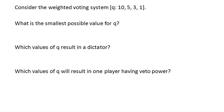Let's consider this weighted voting system. We have players with weights 10, 5, 3, and 1, which means we have a total of 15, 16, 17, 18, 19. The total weight is 19.